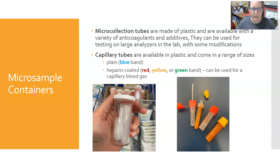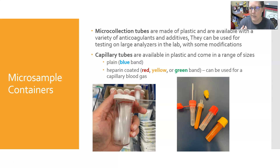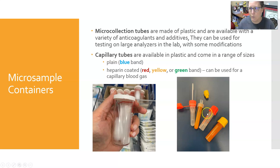Micro collection tubes are made of plastic and are available with a variety of anticoagulants and additives. They can be used for testing on large analyzers in the lab with some modification — usually requiring transfer of plasma or serum into a sample adapter. For whole blood testing such as CBC, there is usually a manual feature allowing the machine to accept a sample directly from the micro collection tube. They come in a variety of sizes and designs.